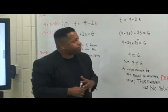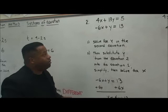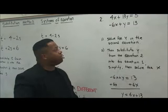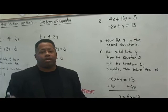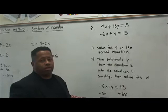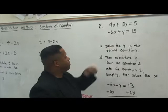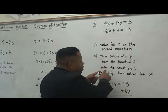4x plus 13y is equal to 5, and negative 6x plus y is equal to 13. You can solve for either variable — you have two equations and two unknowns. You can solve for x and plug it into the other equation, or solve for y and plug y into the other equation. In this case, since equation 2 is much more simplistic, we're going to solve for y in the second equation and then substitute y into the first.